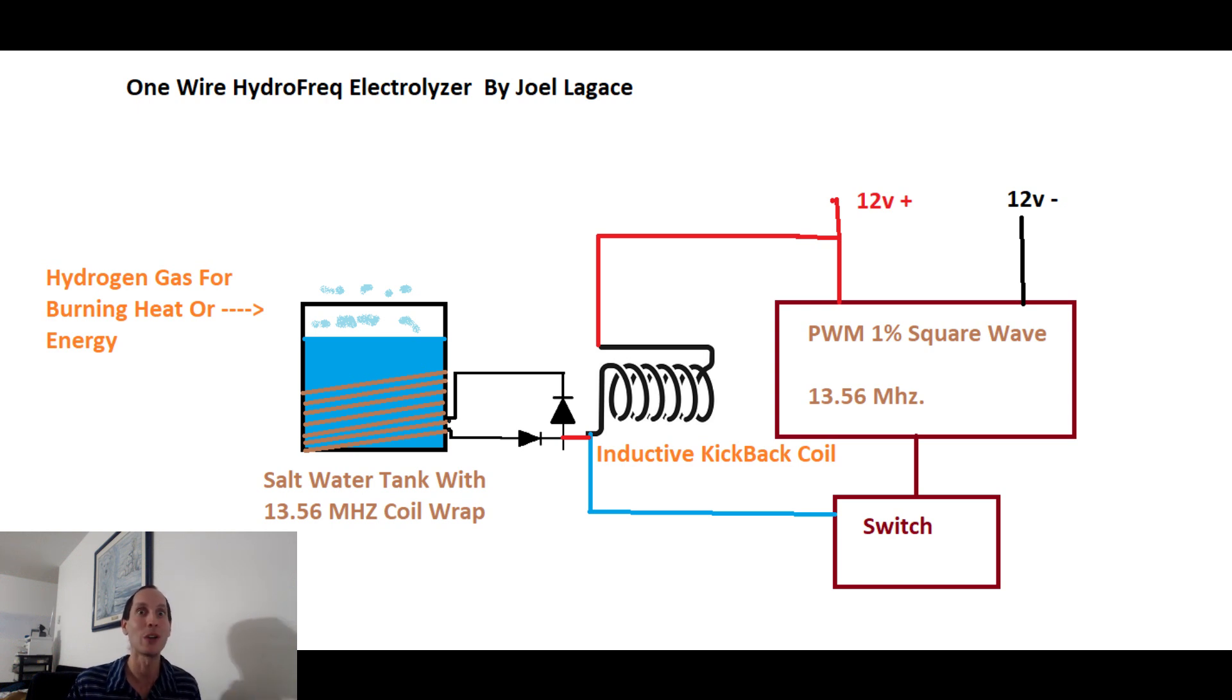Again, why do we use current for this? We don't need to use current if you know what you're doing. So a little modification of the Bedini setup, you pulse a big coil. The bigger, the better, the more mass. You get a massive back EMF kickback. We rectify that kickback with the one-wire diode system. It feeds a coil which energizes your water storage, the salt water.